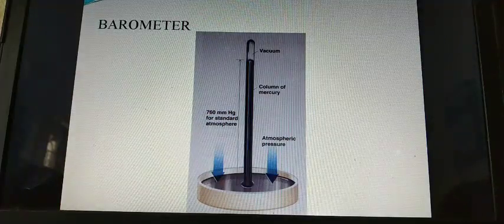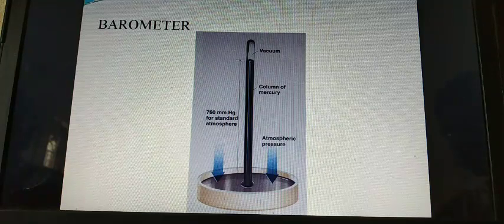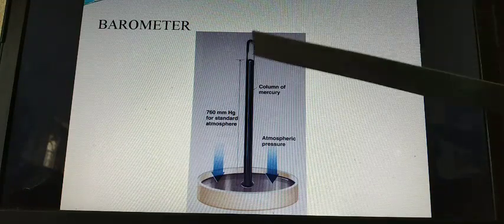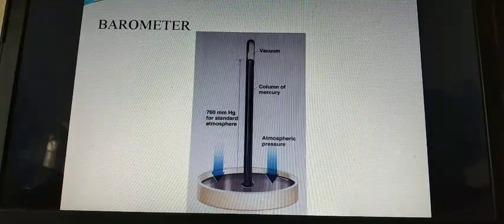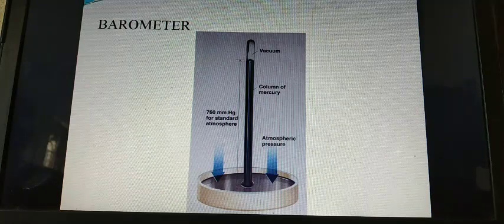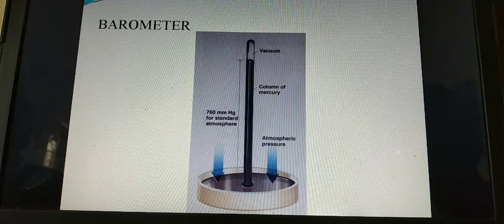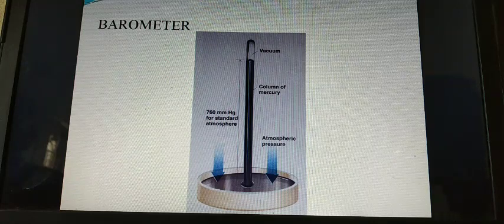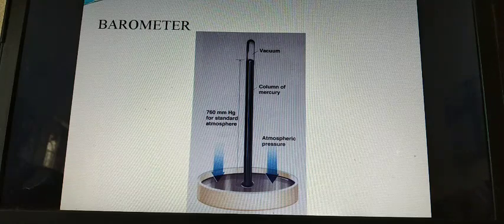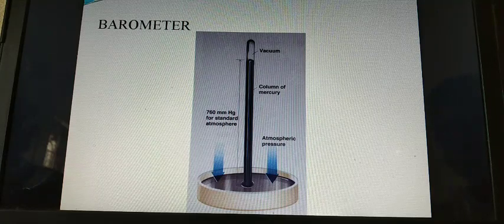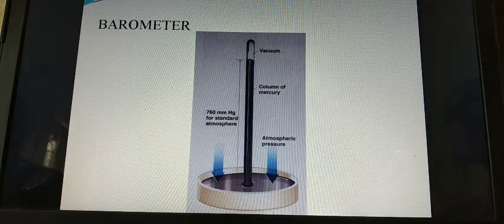Even if you tilt the tube, the level of mercury won't vary. At sea level, the height of the mercury will be around 76 centimeter. This is called 1 atmosphere. We studied in the previous lesson, the unit for pressure in SI system is Newton per meter square or Pascal. The pressure equivalent to the 76 centimeter column of mercury is approximately 1.013 into 10 to the power 5 Newton per meter square.